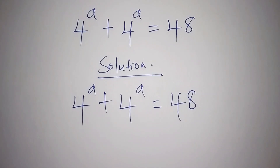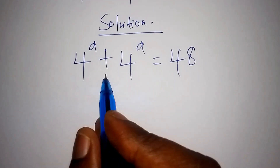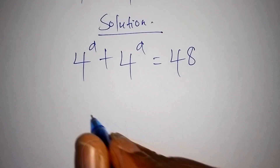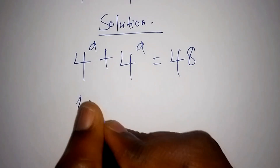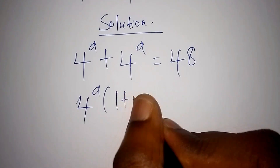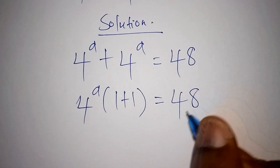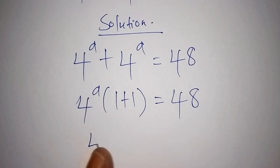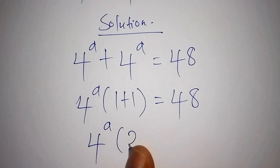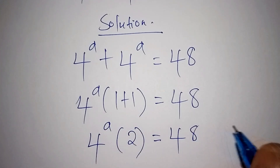The first step we are going to do is factorize 4 to the power of a plus 4 to the power of a. This can also be written as 4 to the power of a, into bracket (1 plus 1), is equals to 48. Working out the bracket: 4 to the power of a times 2 is equals to 48.